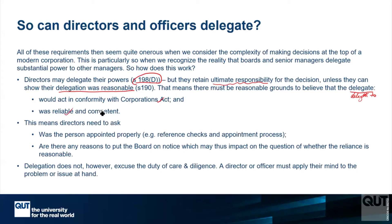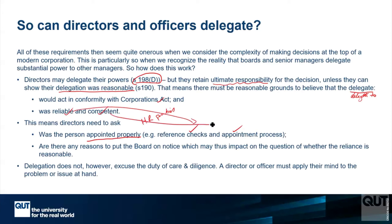You have to believe that they're reliable and competent. That's what the court is going to look at. If I delegate to someone and then rely on them, how did I know that they were reliable? How did I know that they were competent? How did I know that they would act in conformity with the Act? That often comes down to things like your human resource practices — for instance, did you appoint the person properly? Did you do reference checks? Did you check that they were competent as part of the appointment process? These kinds of things can demonstrate that you checked that they were reliable and competent.